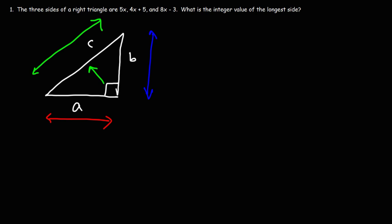That's a 90-degree angle. Here's the formula that will help you calculate the missing side of a right triangle: A squared plus B squared is equal to C squared.